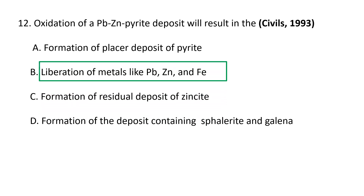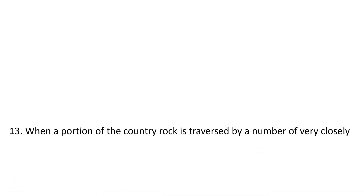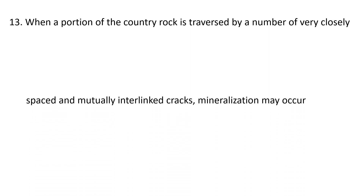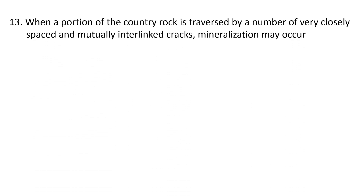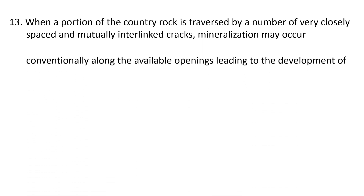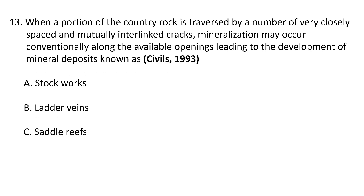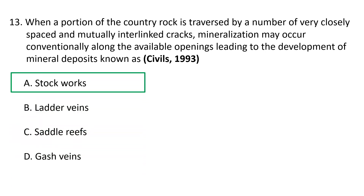Next question: When a portion of the country rock is traversed by a number of very closely spaced and mutually interlinked cracks, the mineralization may occur along the available openings. This leads to the development of mineral deposits known as A. Stockworks, B. Ladder veins, C. Saddle reefs, D. Gash veins. The correct answer is A. Stockworks — consisting of a portion of country rock traversed by closely spaced interlinked cracks along which mineralization occurs.